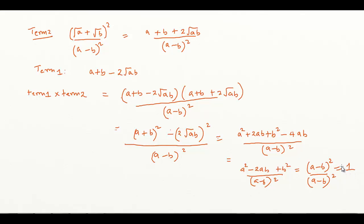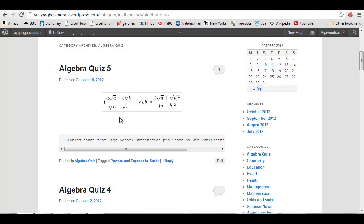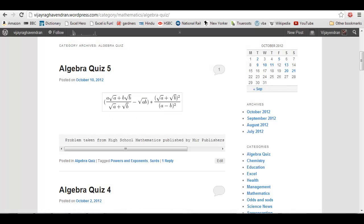Isn't that fantastic? We started off with a very large expression and after simplification, when you multiply those two terms, what we get is 1. So this is the solution — these two terms multiplied together give us 1.